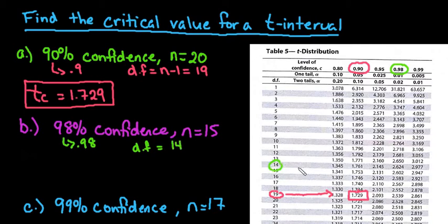So we would go to the 14 here and we'd go across this row until we get to the correct column and we can see that it's 2.624.